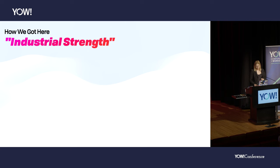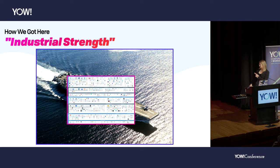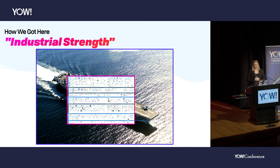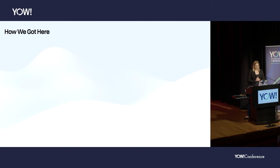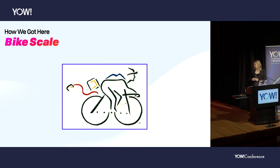Peter van Hardenberg at Ink and Switch has a nice metaphor: right now all software is written as if it's an aircraft carrier — really industrial strength, can do anything, go anywhere, carry lots of people. And roughly to scale, this is the CNCF landscape. It's amazing that it's valuable enough to support this many products and companies, but you need this many products and companies just to run this stuff. There are absolutely cases where you need the aircraft carrier, but for a lot of things it feels like we're writing with a brick strapped to our pencil. I've never been on an aircraft carrier, so I'm not writing my software like it's one.